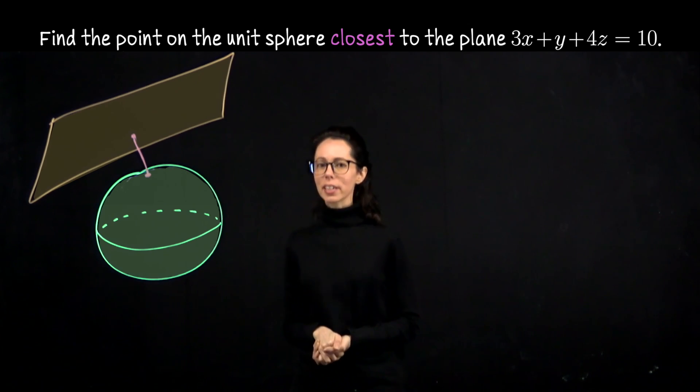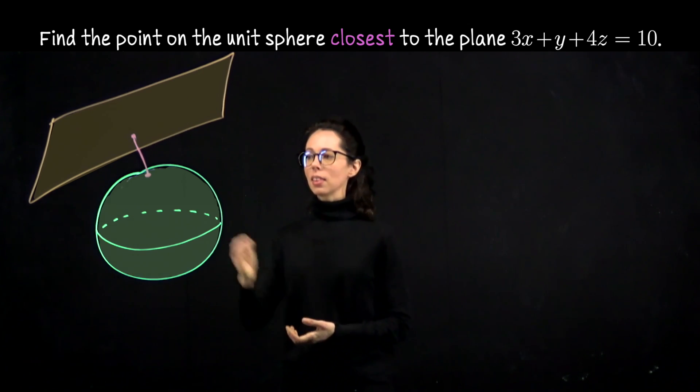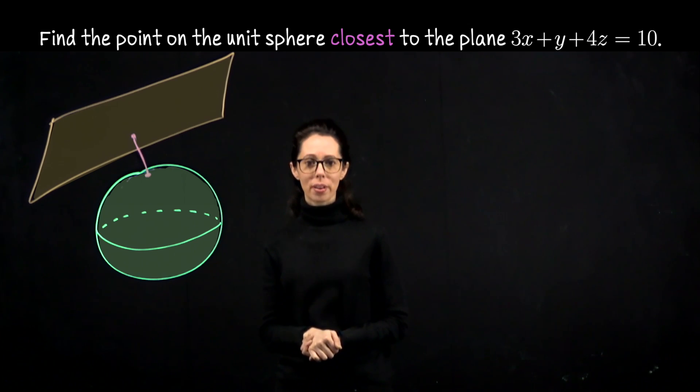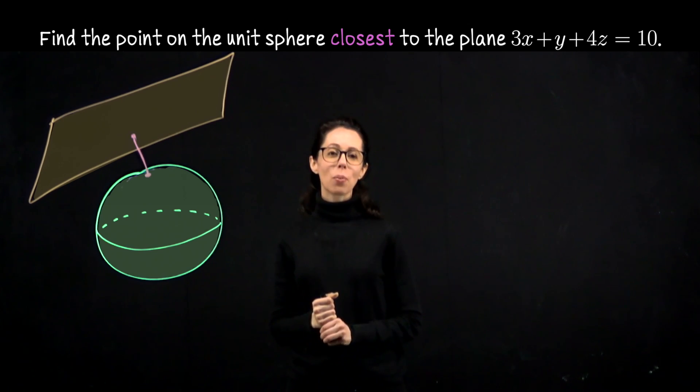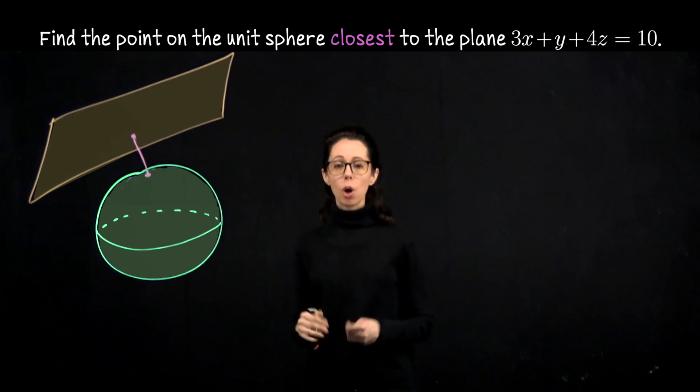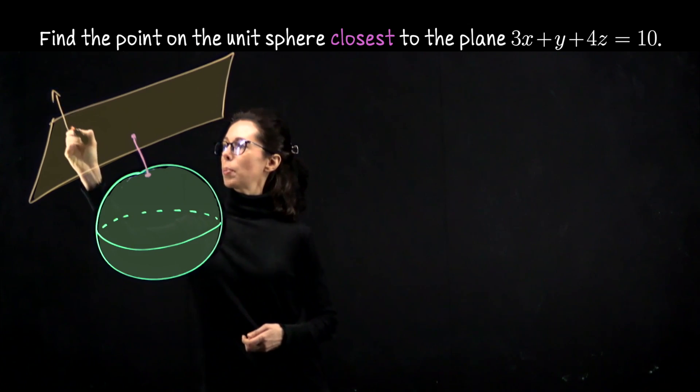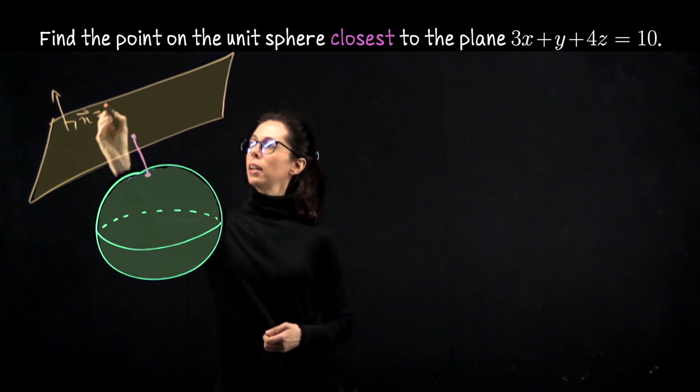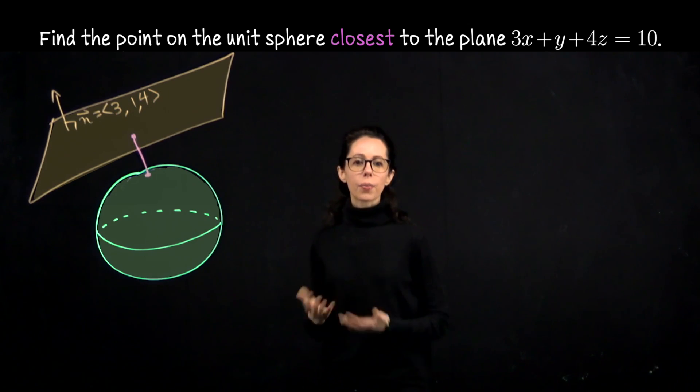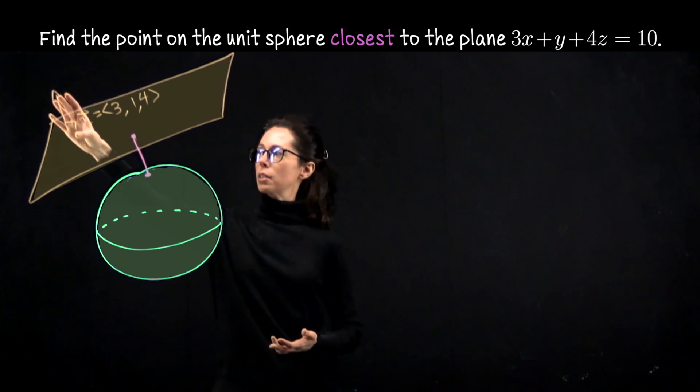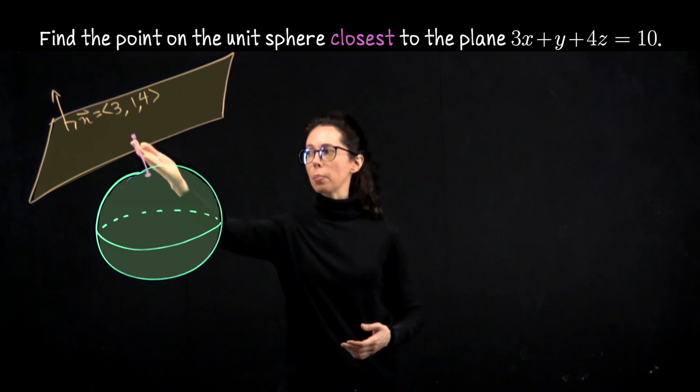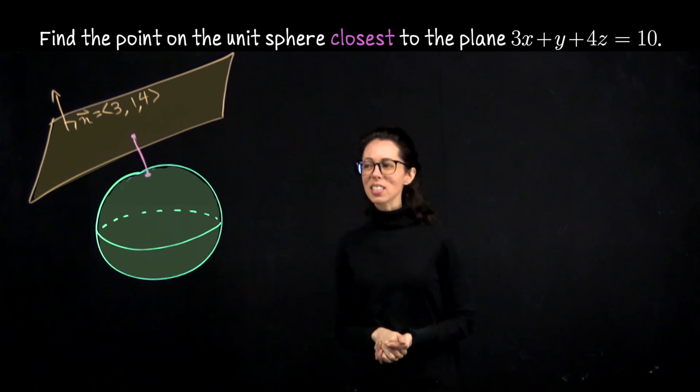From the diagram we start to get some clues. Notice that the line segment that's connecting the sphere to the plane is perpendicular to both. Which means we can immediately say what its sense of direction is. It's got to be parallel to the orthogonal vector for the plane, which we know from the beginning. To be the vector, call it n, and it's the vector 3, 1, 4. So that's the first clue.